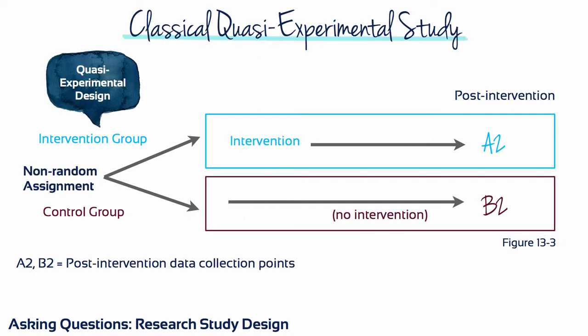Sometimes it is not practical or not ethical to randomly assign people to groups. When random assignment cannot occur, the study is a quasi-experimental study. The subjects are not randomized to the treatment groups, but other aspects of the design are the same as for a true experimental design.